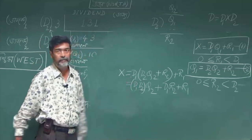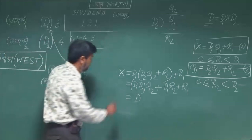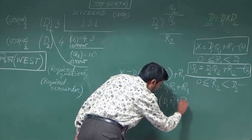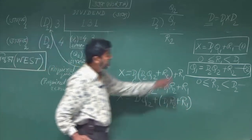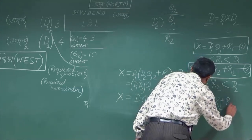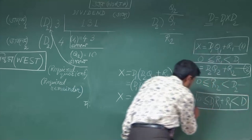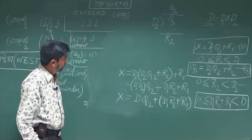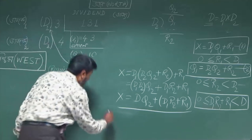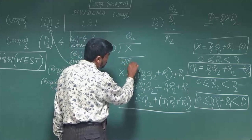Here we have d1·d2, which was the original divisor d. So putting d instead of d1·d2, we get x is equal to d into q2 plus d1·r2 plus r1. Using the two conditions on r1 and r2, it can be shown that d1·r2 plus r1 is greater than or equal to 0 and strictly less than d. This tells us that if we divide x directly by d, the quotient will be q2 and the remainder will be d1·r2 plus r1.